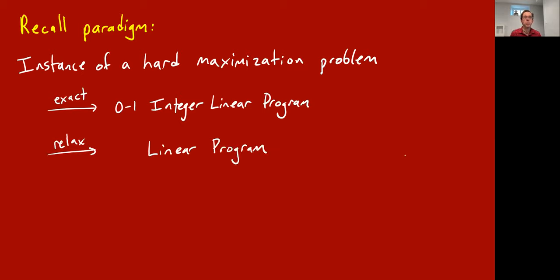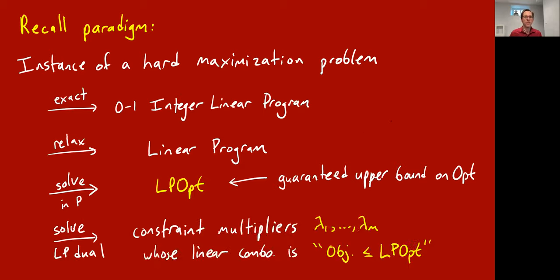Of course solving 0, 1 integer linear programs is NP-hard, so the point is that you relax this integer linear program to just a linear program where the variables can be any real numbers now. And so it no longer exactly captures the problem, but hopefully it's reasonably close. The point is that you can solve this linear program in polynomial time, which is great. You've got some number lpopt, let's assume it's a maximization problem, and a good thing is that this number lpopt is guaranteed to be an upper bound on the true opt. I mean ideally it'll be maybe close to the true opt, but at least it's guaranteed to be an upper bound on the true optimum.